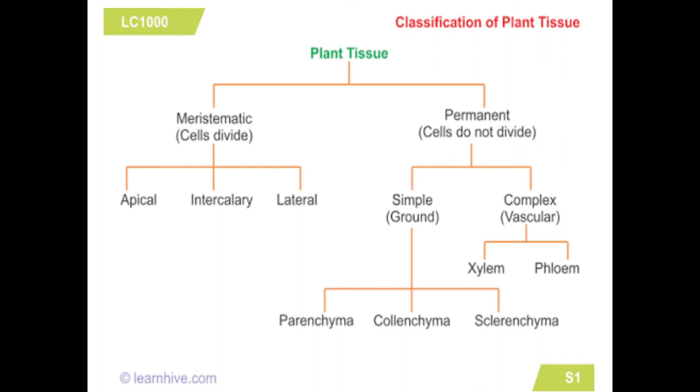The three types are apical, intercalary, and lateral. Intercalary meristematic tissue is found at the nodes and internodes of the stem.